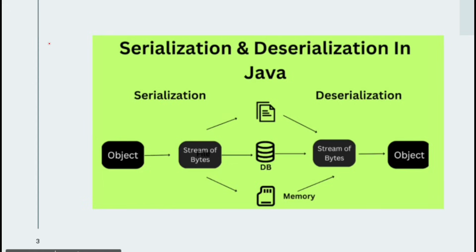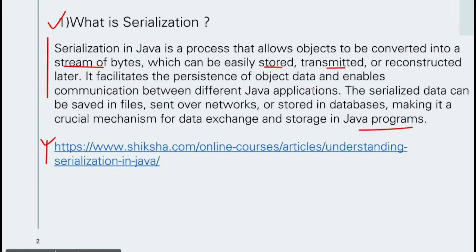Here is a picture of serialization versus deserialization. Serialization is converting an object into a stream of bytes; if you convert a stream of bytes back to an object, that is deserialization. We basically use serialization for storing, transmitting, and reconstructing data.